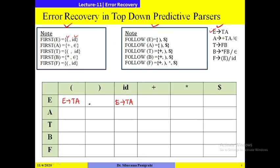For A → +TA, FIRST(+TA) gives +, so under row A and column + we write A → +TA. For A → ε, this is an epsilon production, so we compute FOLLOW(A). FOLLOW(A) is closing bracket and dollar, so under closing bracket and dollar we write A → ε.